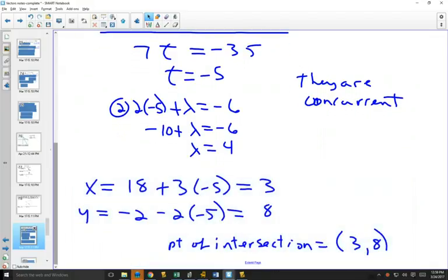So if we wanted to find out what are those coordinates and find that point of intersection, I'm plugging in the t value into that equation. I could have plugged the lambda value into the other equation. Sometimes you like to plug them both in just to verify you haven't made a mistake. And we find that these two lines intersect at (3, 8).